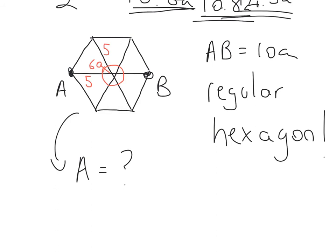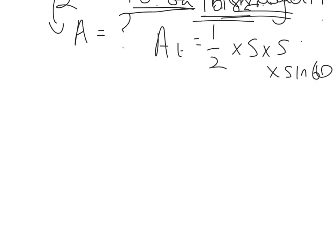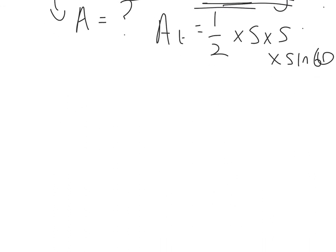So I can now do area of a triangle. Half times 5 times 5 times sine 60. And that will give me 10.83 to two decimal places.